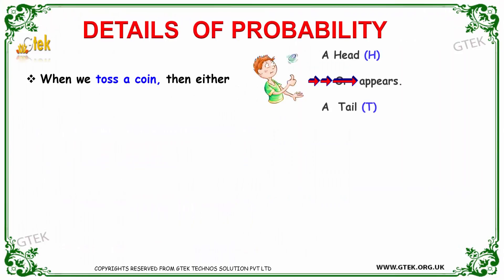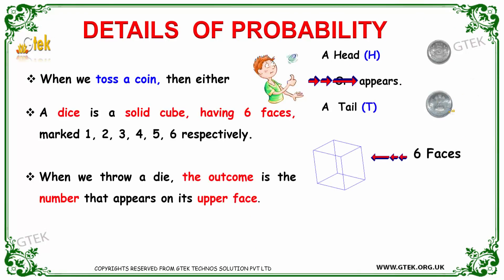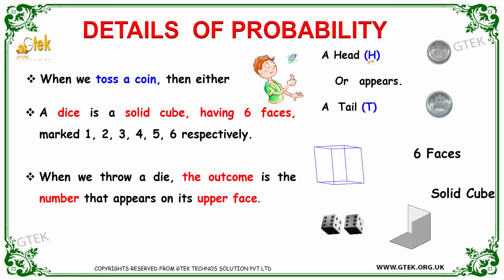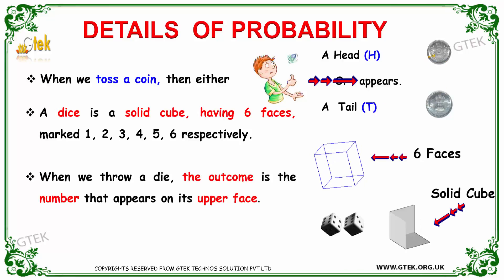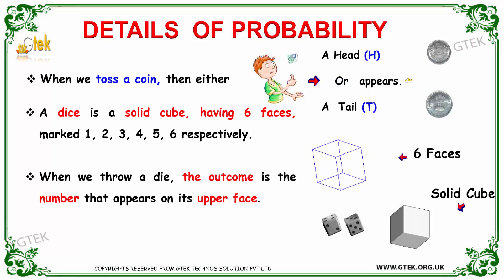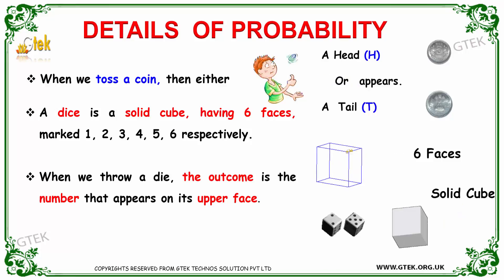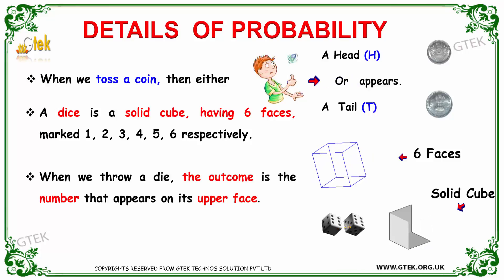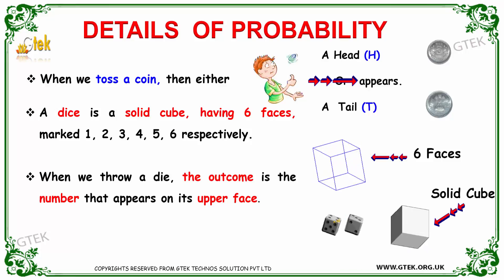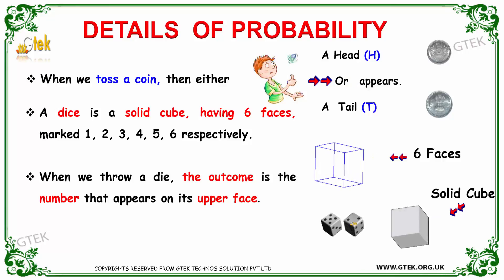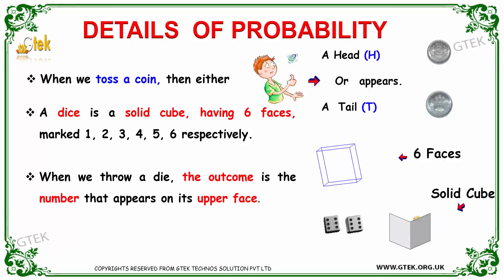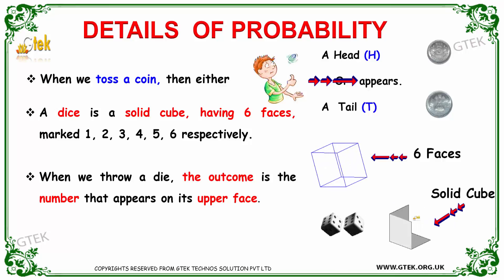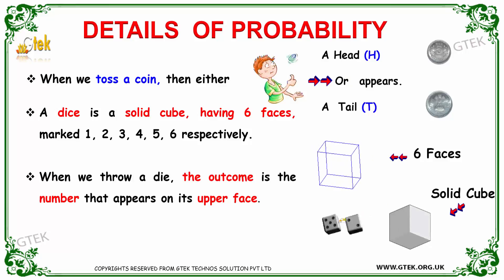When you toss a coin, we'll get either a head or a tail. A dice is a solid cube having six faces which is marked 1, 2, 3, 4, 5, and 6. When we throw a die, the outcome is the number that appears on its upper face.